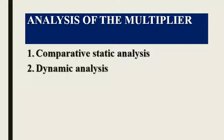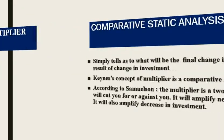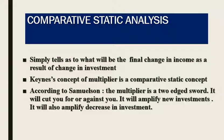The working of the multiplier can be understood in two ways: comparative static analysis and dynamic analysis. In this video, our focus is on comparative static analysis. Comparative static analysis simply tells us what will be the final change in income as a result of a change in investment. It tells us only the conclusion — given the investment, this is the final result in terms of the increase in income.